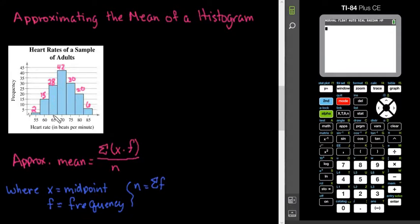Remember that a histogram doesn't preserve the actual data points, so we don't know. Although we know that there are 28 points that fall in this range, we do not know how many of them are, say, 65 or 64. So with this, what we can do is we can approximate the mean by using a formula that is very similar to the weighted mean formula that I have done in previous videos.